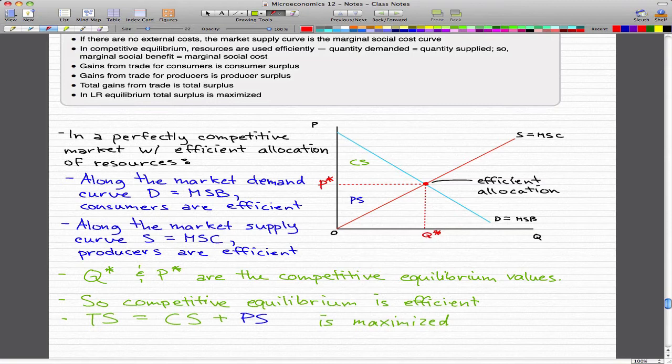The quantity Q* and the price P* are the competitive equilibrium values. Competitive equilibrium is efficient in this situation, and you know it's efficient when the total surplus—the sum of consumer surplus plus producer surplus—is maximized.